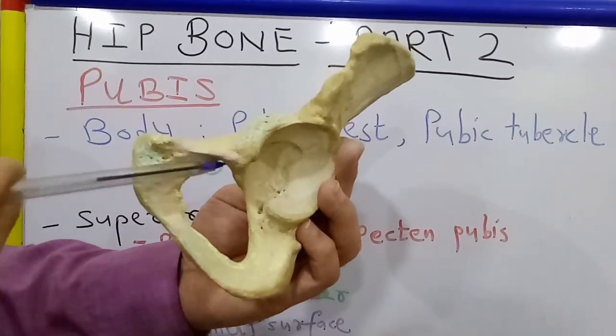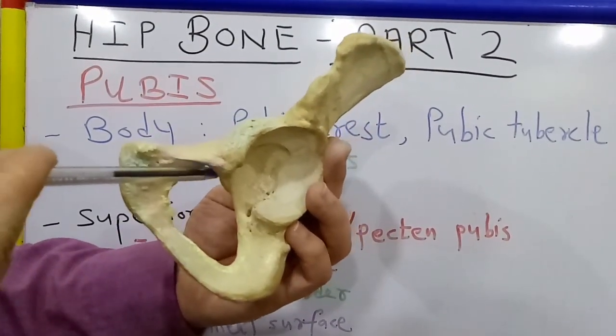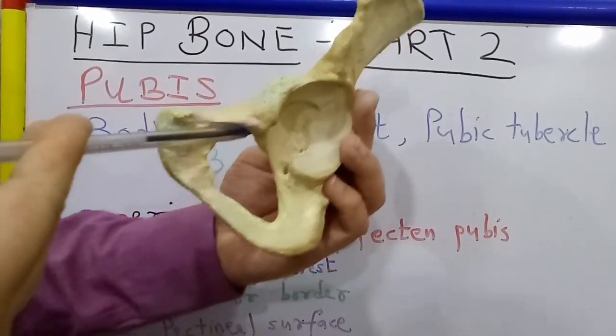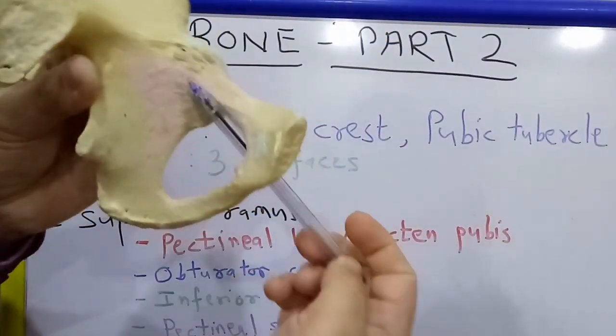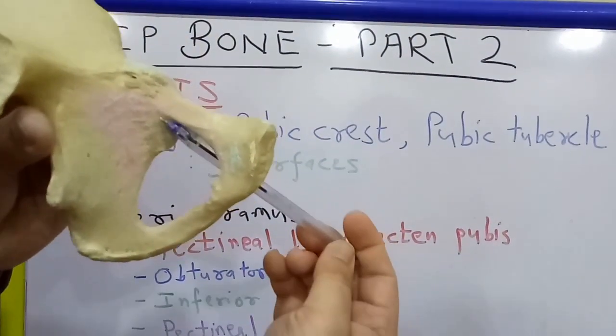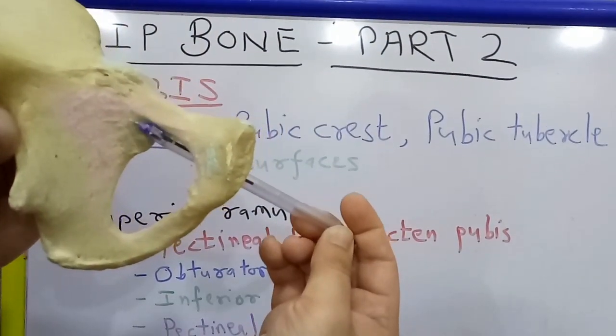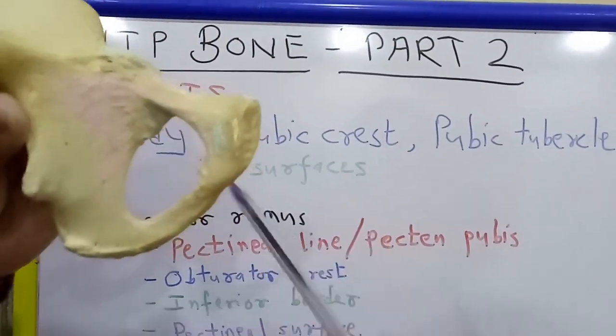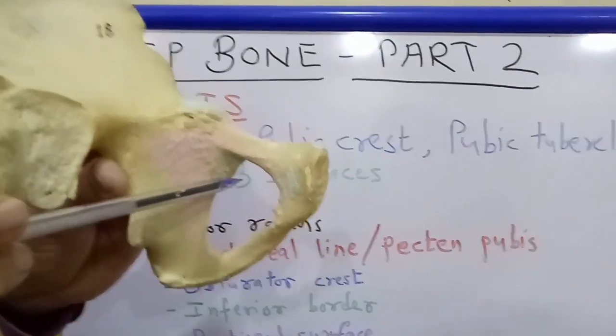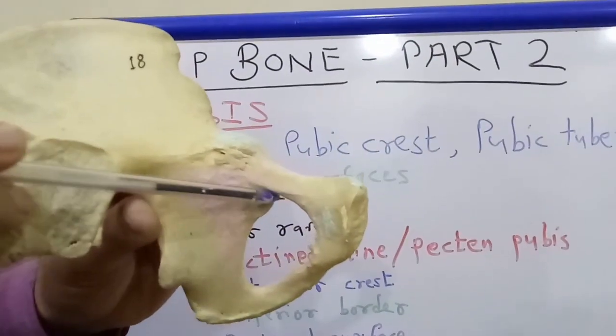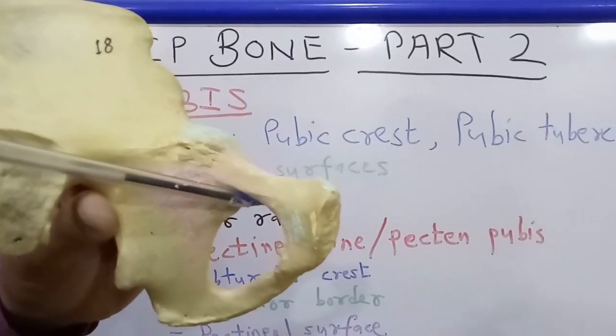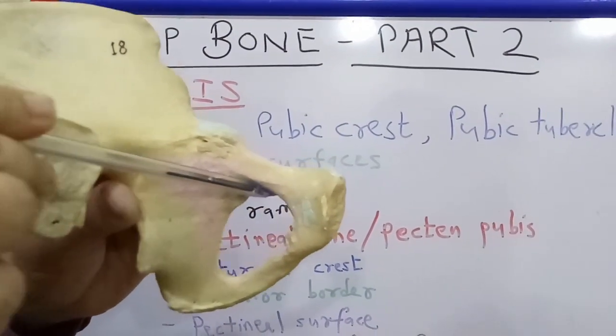This surface has a groove known as the obturator groove. The obturator groove transmits the obturator nerve and vessels out of the pelvis.